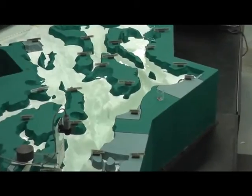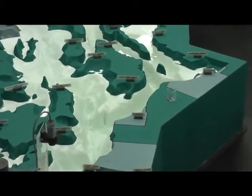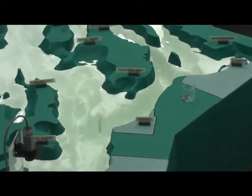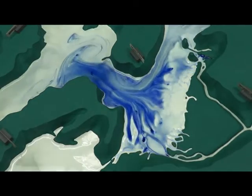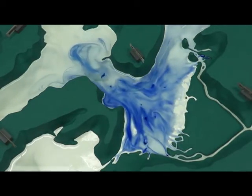Tides in Whidbey Basin are relatively weak because they lose energy as they turn 180 degrees where it connects to the main basin through Possession Sound. Surface water from rivers, such as the Skagit, floods and ebbs, but gradually flows seaward as we saw in the main basin.